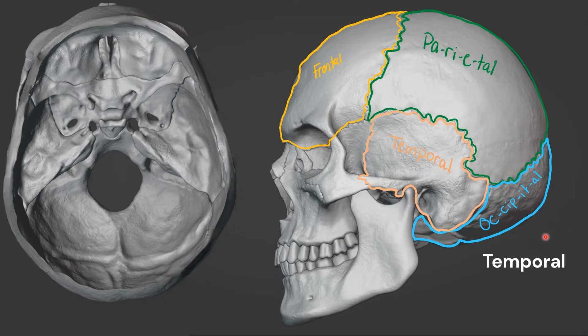In front of the temporal bone is the sphenoid. And in the eye socket, we can see a little bit of the ethmoid bone.